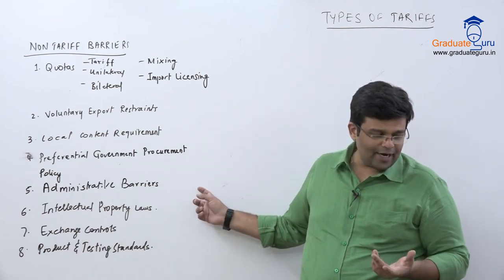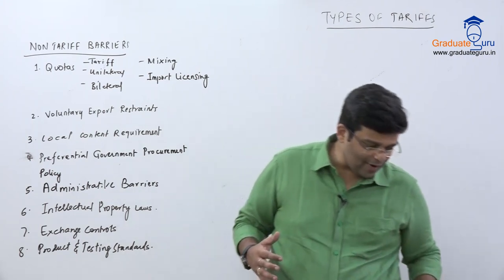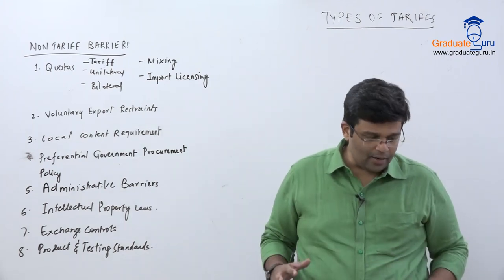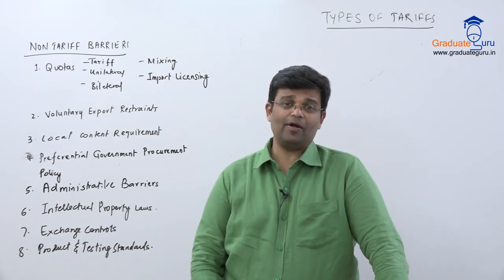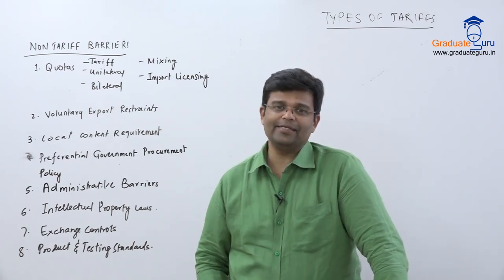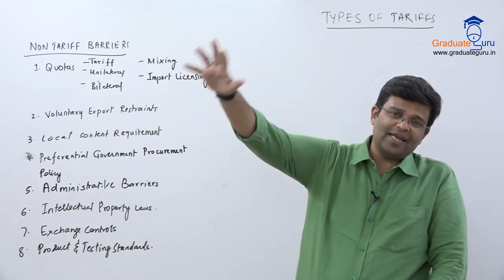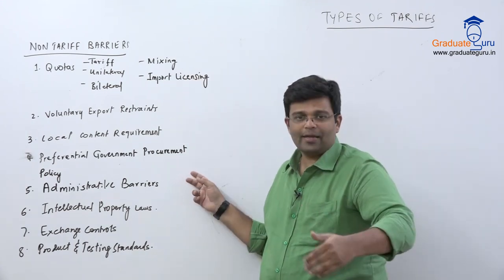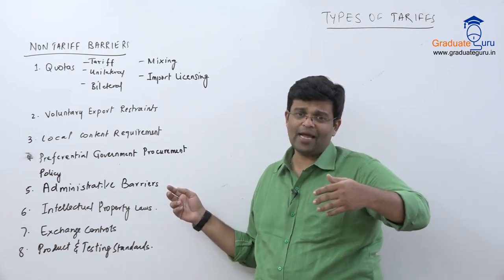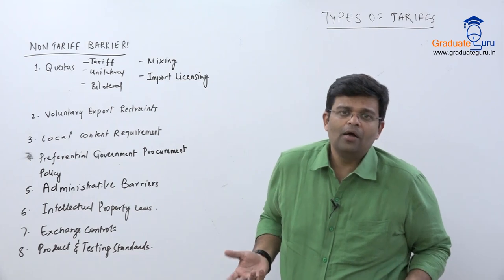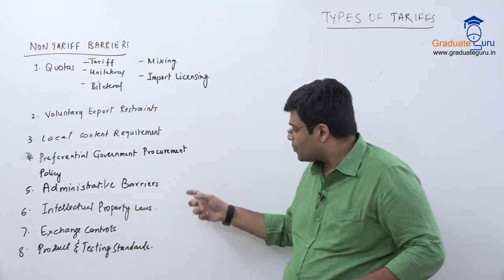Preferential government procurement policy is very dominant in India. When the government procures goods for itself — food grains, defense equipment — it prefers only domestic industries and not imported items. Any company that uses imported items will not be allowed to participate in the government procurement process. The government procures only from local producers making local goods.